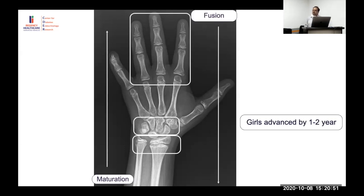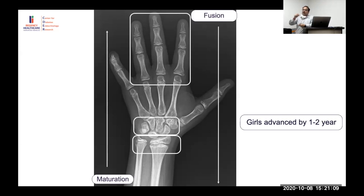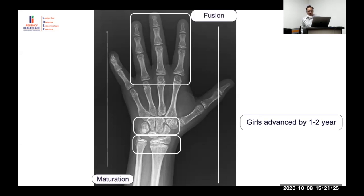Girls have advanced bone age by one to two years compared to boys — even pre-pubertally. A four-year-old girl will have a bone age one year ahead of a four-year-old boy because girls have roughly three times more estrogen even during prepubertal age. Estrogen is the most important mediator of epiphyseal fusion, which is why girls at all ages are skeletally more mature than boys.